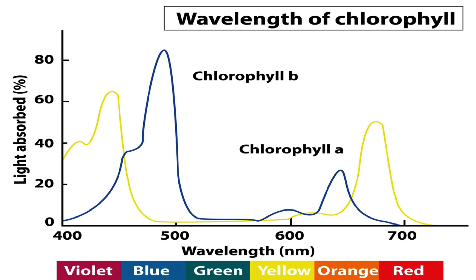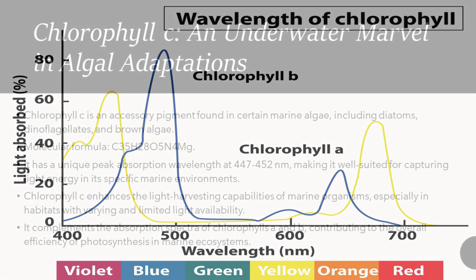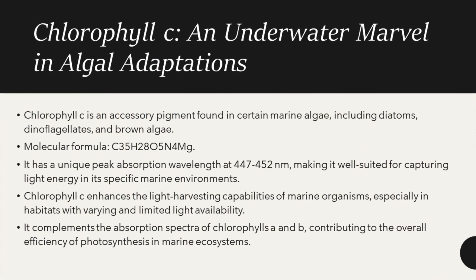In the 400 to 500 nm range, chlorophyll A absorbs light ranging from violet to blue, and also some in the orange and red range. Most leaves get their green color because they don't absorb wavelengths from 500 to 600 nm, indicating a peak in chlorophyll B at around 500 nm.